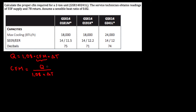In other words, if we want to obtain the CFM we need the sensible heat and we need the delta T. Let's start with the delta T. Delta T equals the temperature on the return side minus the temperature on the supply side. The return side temperature is 78°F and the supply side is 55°F, so delta T equals 23.